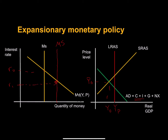Our new equilibrium interest rate will be at a lower rate. There is a negative relationship between the quantity of investment and the interest rate, so if the interest rate falls, then investment is going to increase. And we're going to see an increase in aggregate demand, hopefully closing this gap.